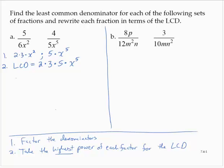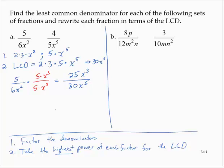Rewriting each of those fractions: we have 5 over 6x squared. I need to multiply that by something so that I have the LCD, which we can rewrite as 30x to the fifth. I need the denominator to be 30x to the fifth, so I would have to multiply by 5 and x cubed to get that denominator, and do the same to the numerator. That gives me 25x cubed over 30x to the fifth.